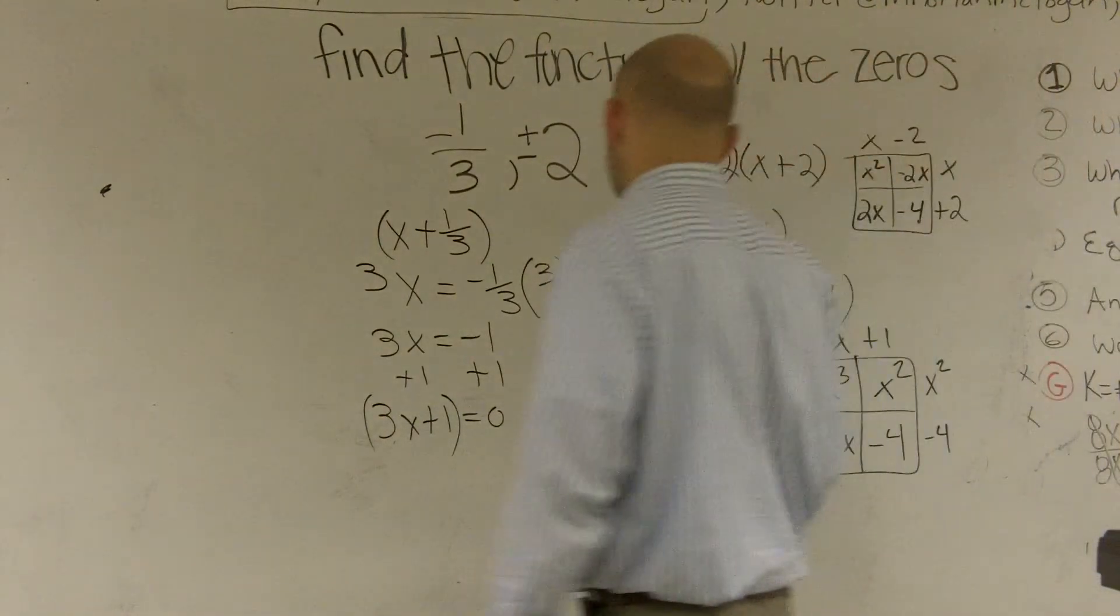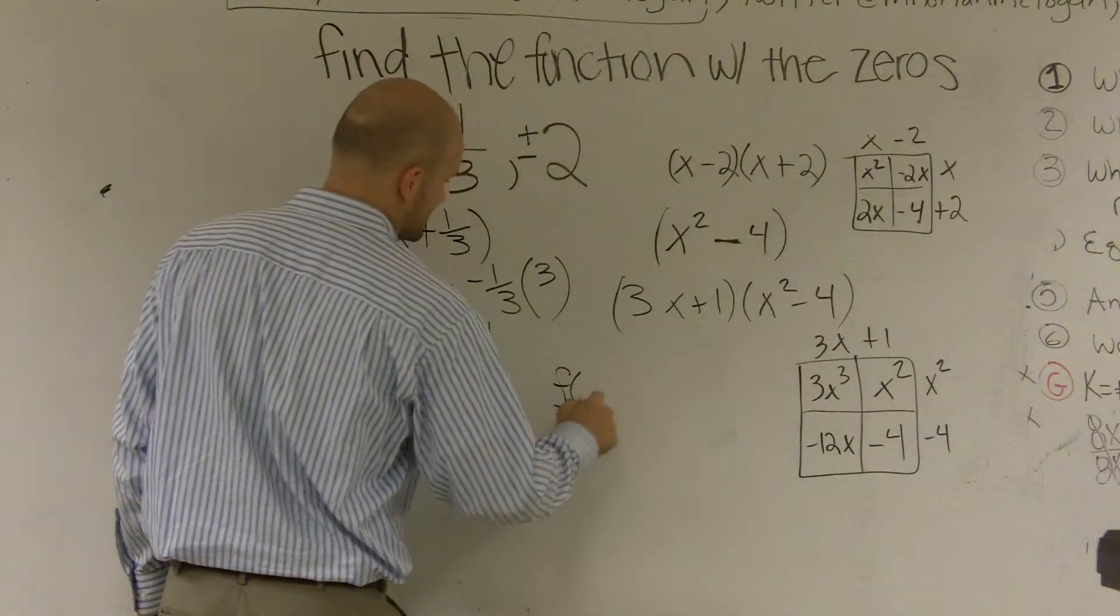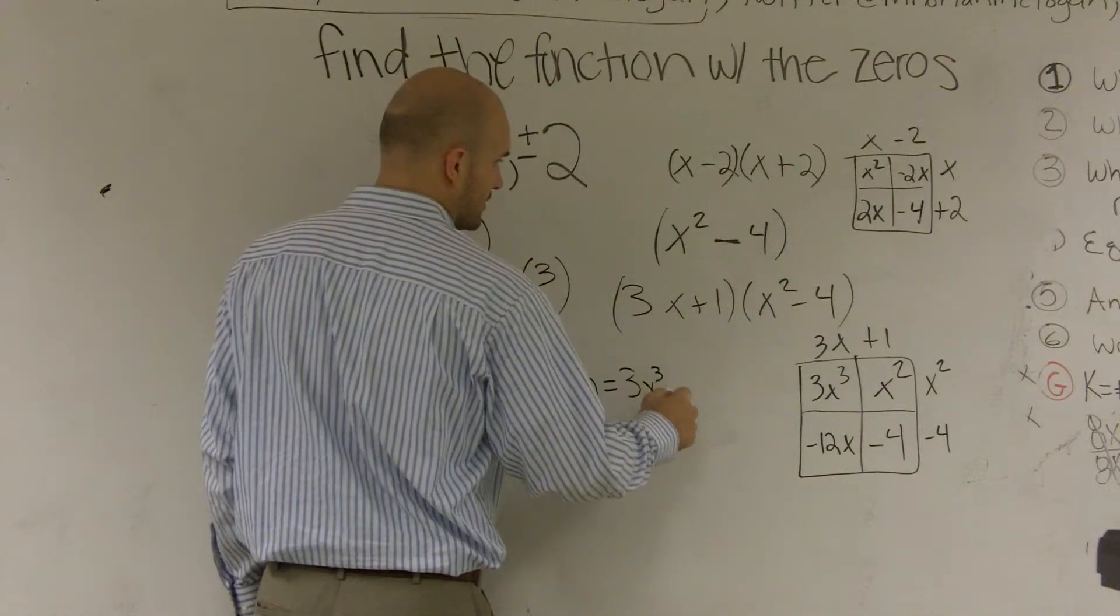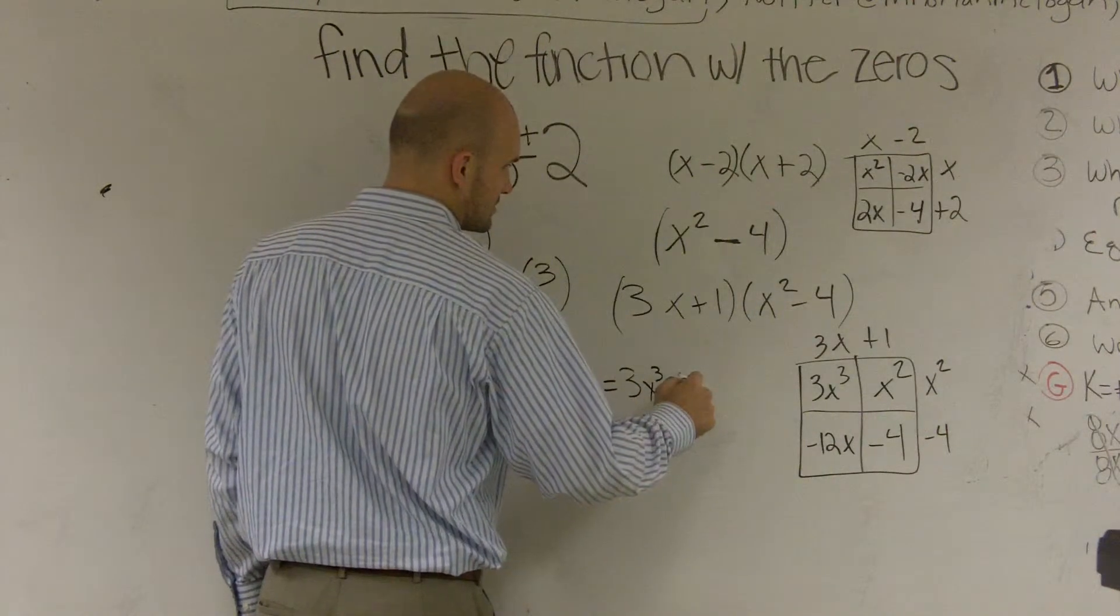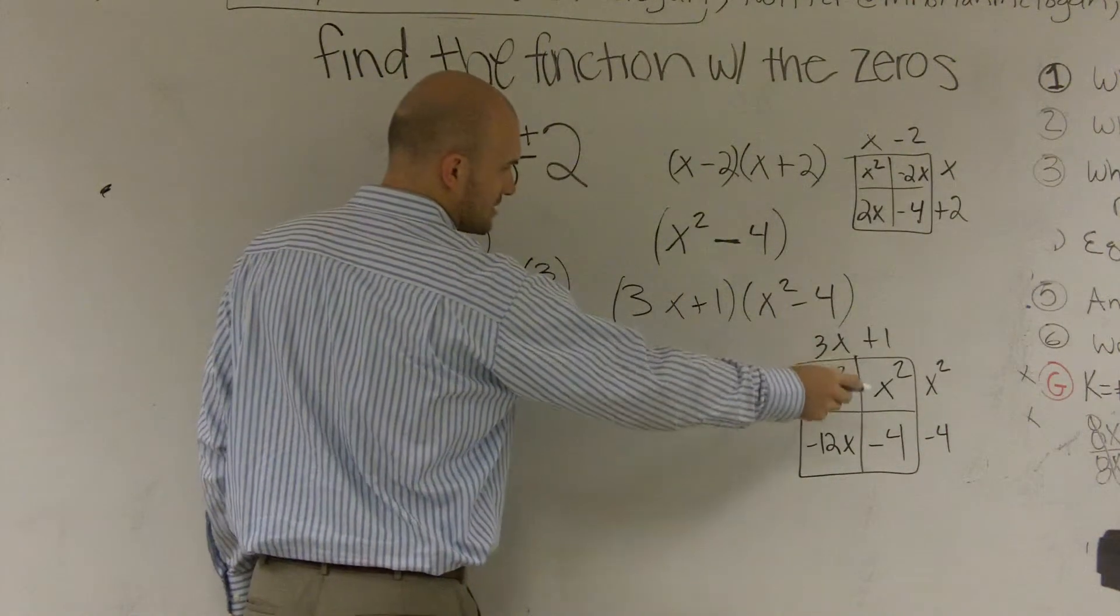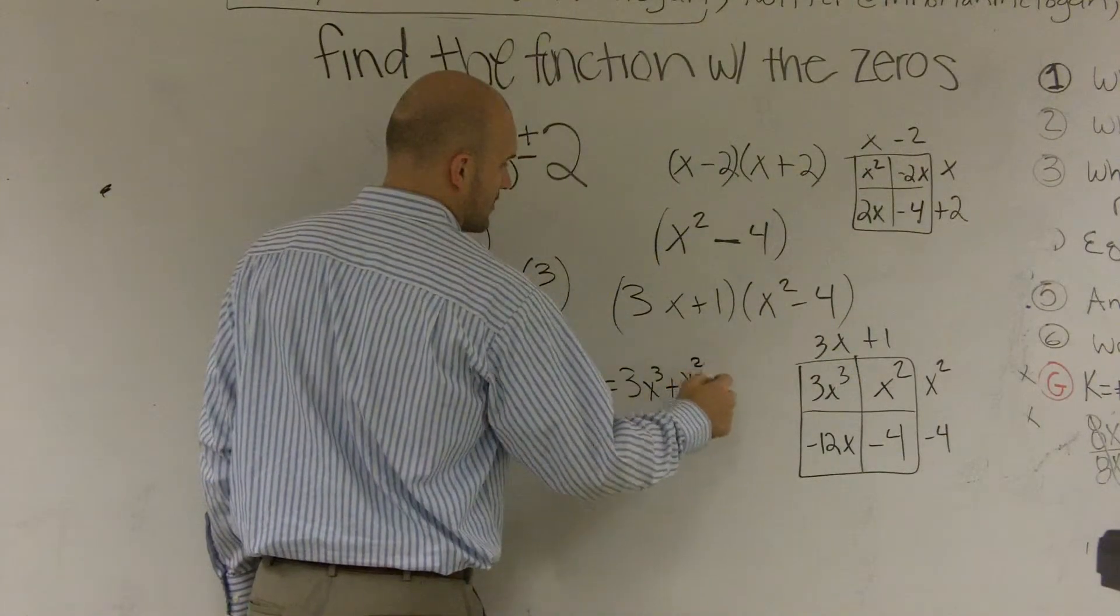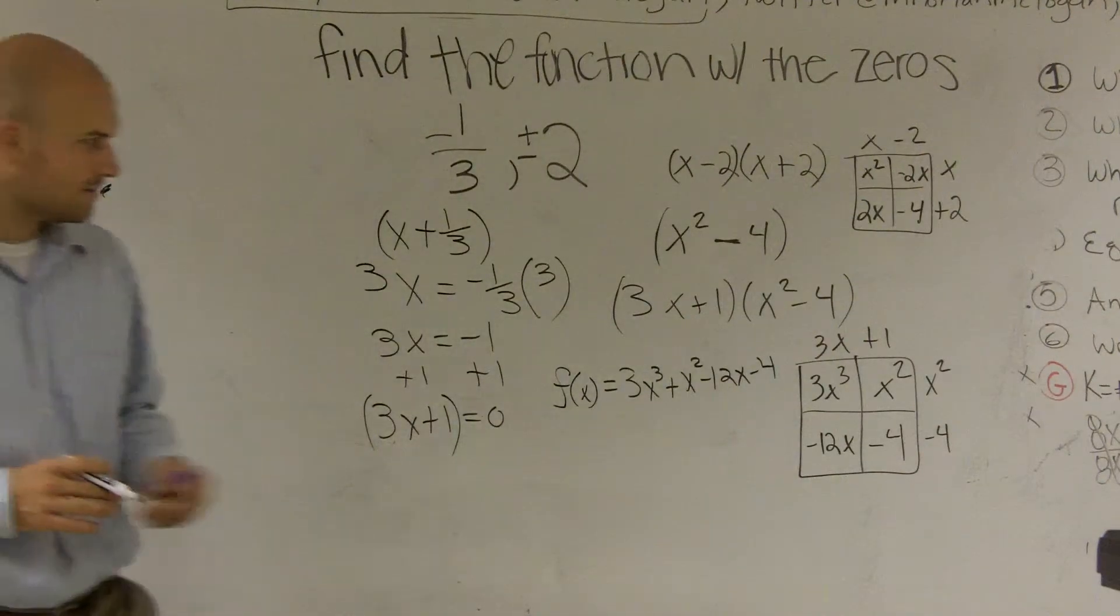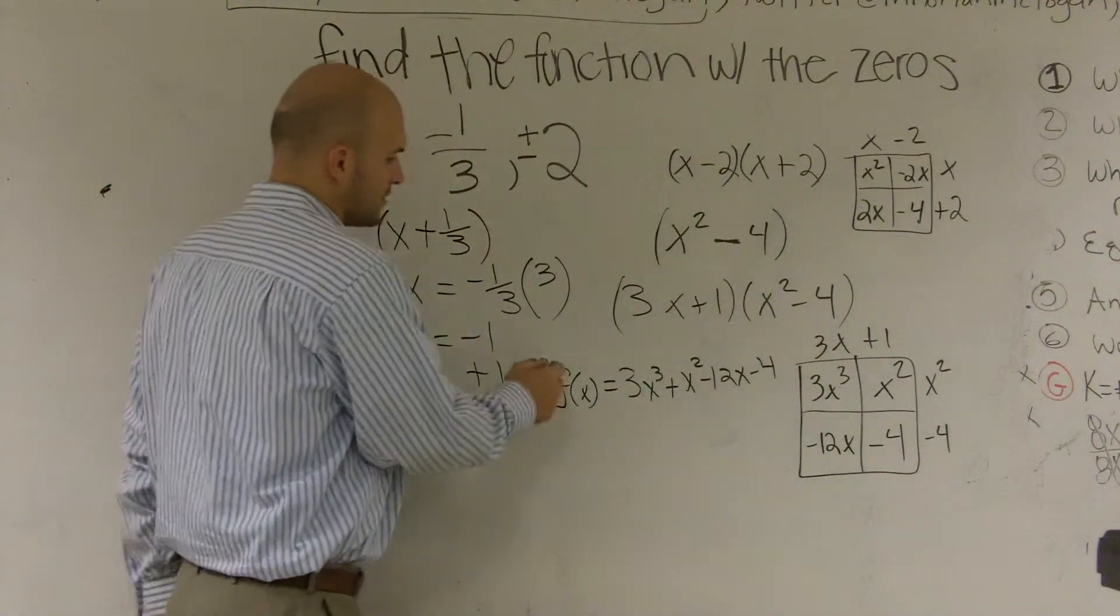So my function, which I'll call f of x, equals 3x cubed plus x squared. I mean x squared. Yes, x squared. Minus 12x. Minus four. Minus four? Oh, yes. Minus four. And the other important thing, just to remember,